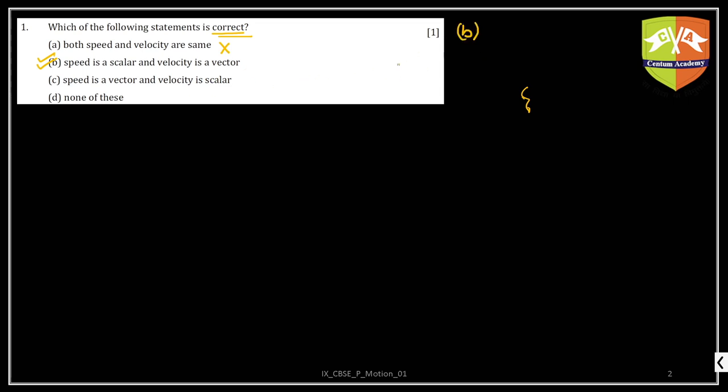But it is always advisable to have a look at the other options as well. Is speed a vector? No, this is an utterly wrong statement. And none of these - now that we already have an option, this is also ruled out. So the answer is B.